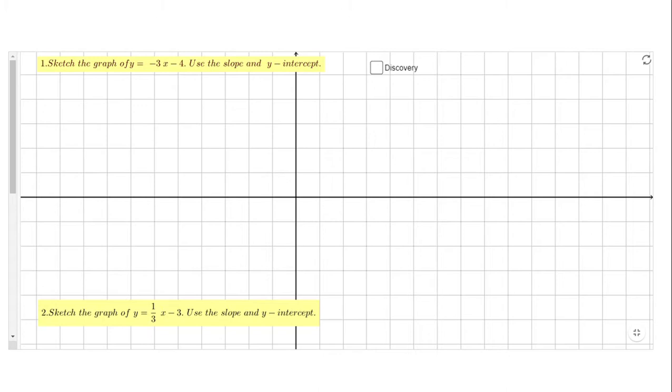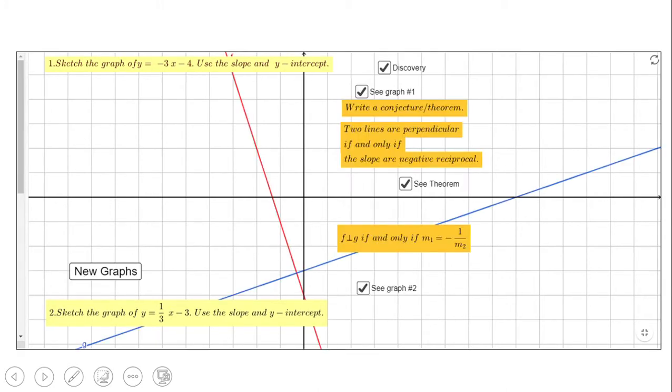If you take a look at this picture, you can see the property of slopes for perpendicular lines. The blue line and red line are perpendicular. We can see in the picture one positive slope and one negative slope. In fact, the slopes are negative reciprocals. You can go on GeoGebra and see more graphs like this by clicking new graphs.